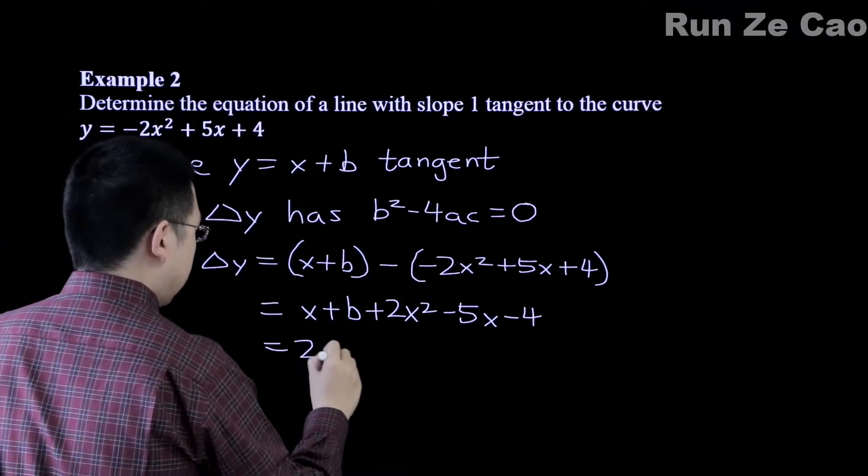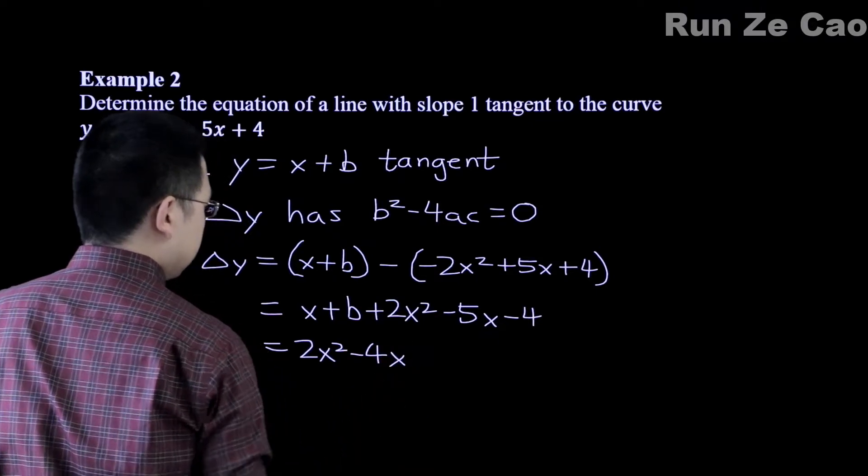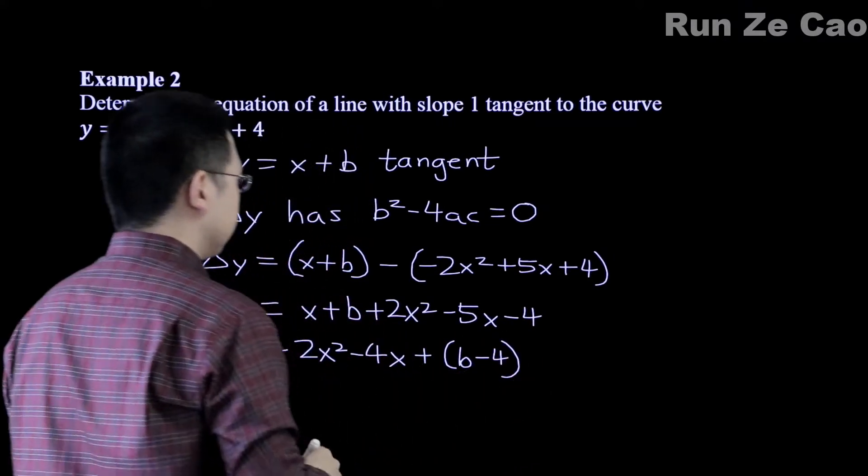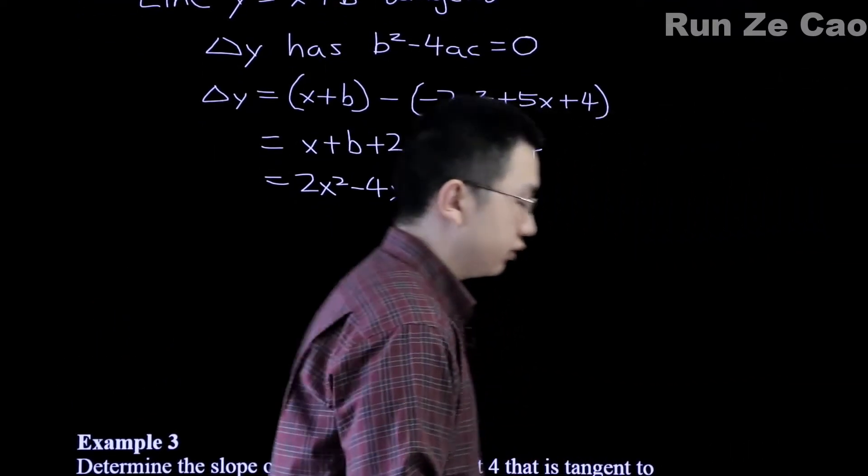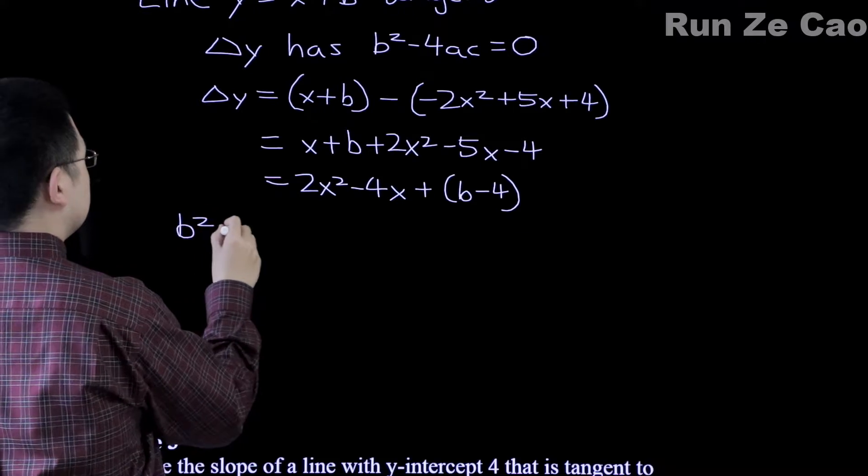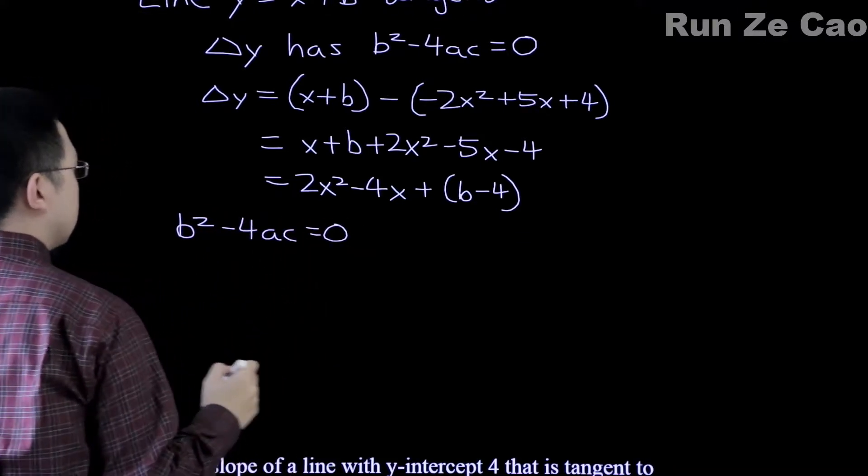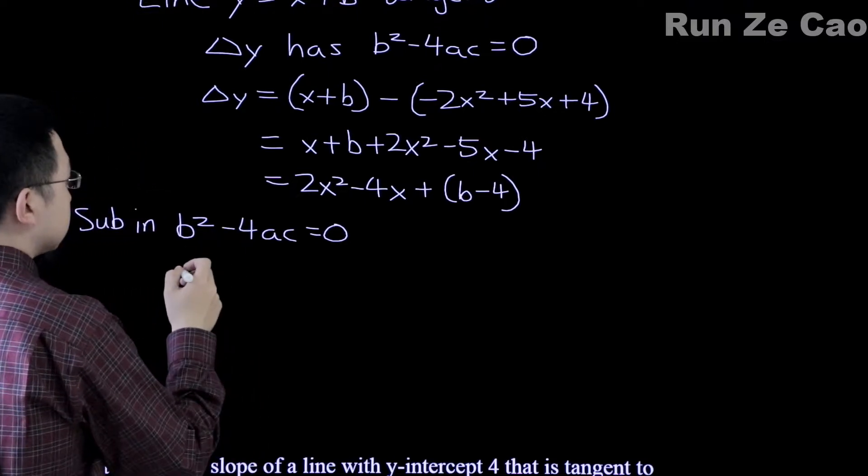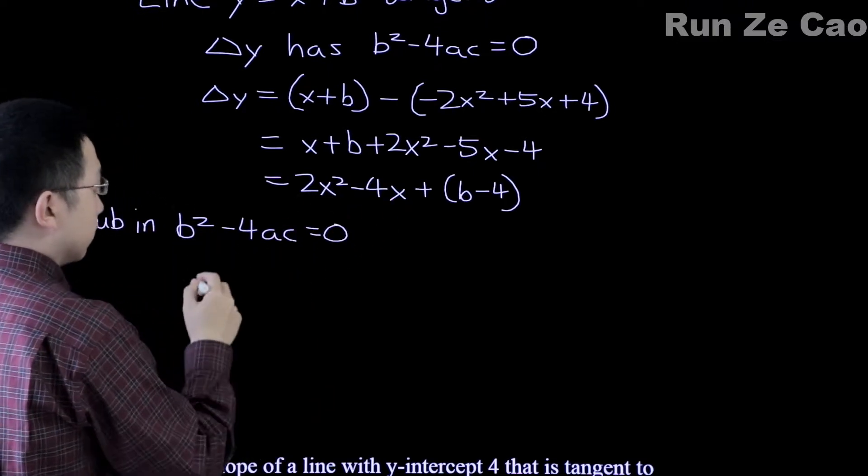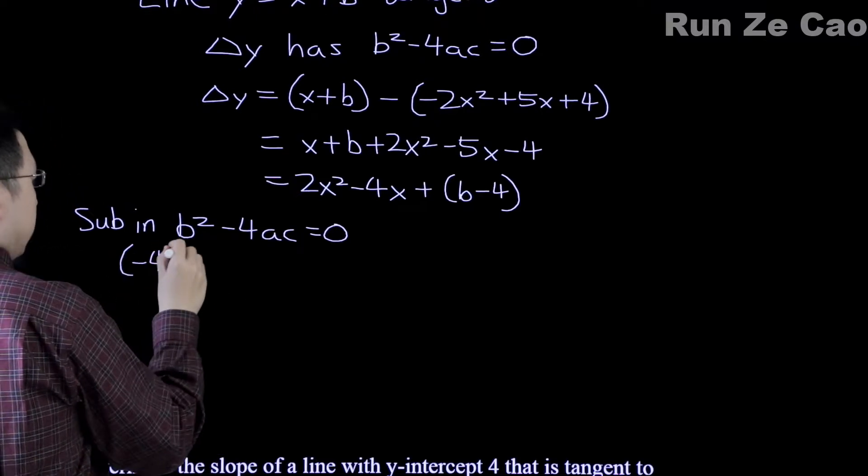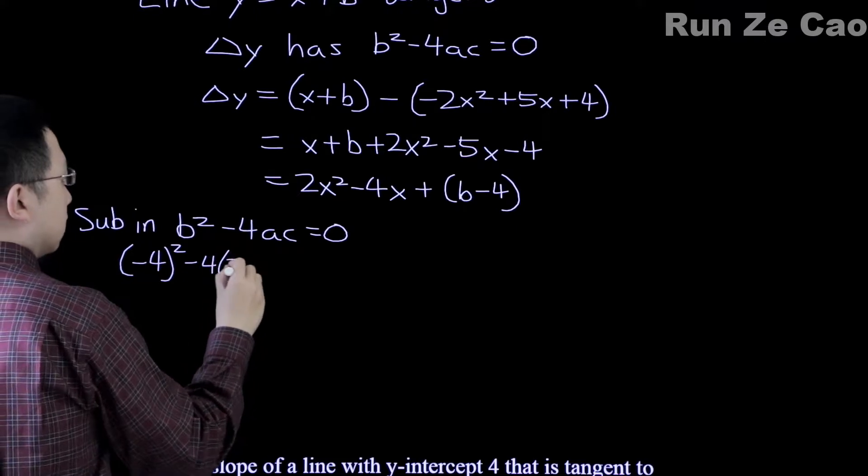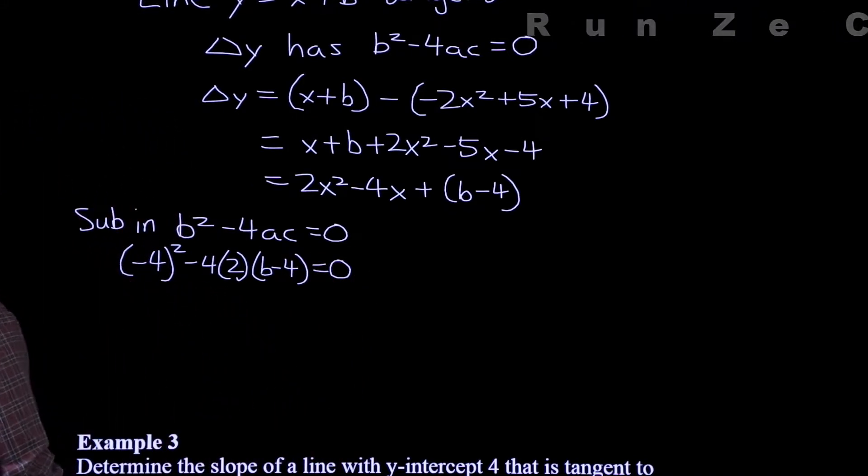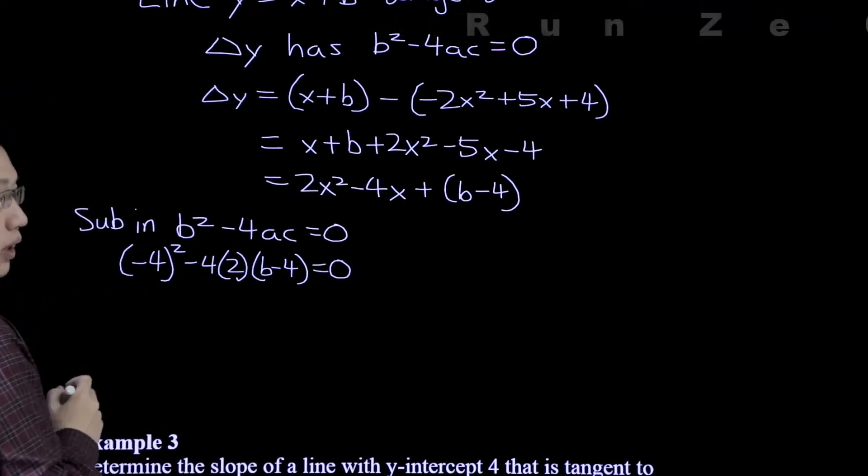So this is 2x squared minus 4x plus b minus 4. So the b squared minus 4ac equals 0 comes out to - well, the actual b term here is going to be negative 4, so negative 4 squared minus 4 times a is 2 and c is b minus 4, and this is equal to 0.